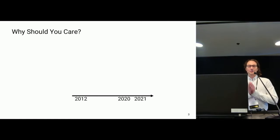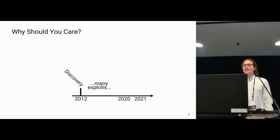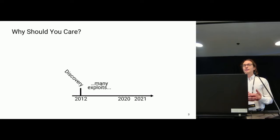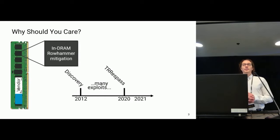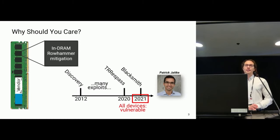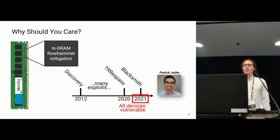So why should you care if this is not enough? Since its discovery, many exploits have been published. With DDR4, vendors said the problem was fixed and it was not a vulnerability anymore. However, in 2020 with Trespass, we saw that there is an in-DRAM Rowhammer mitigation deployed in chips, but DRAM devices are still vulnerable. And as my colleague Patrick just showed with Blacksmith, it turns out all devices are still vulnerable to Rowhammer.